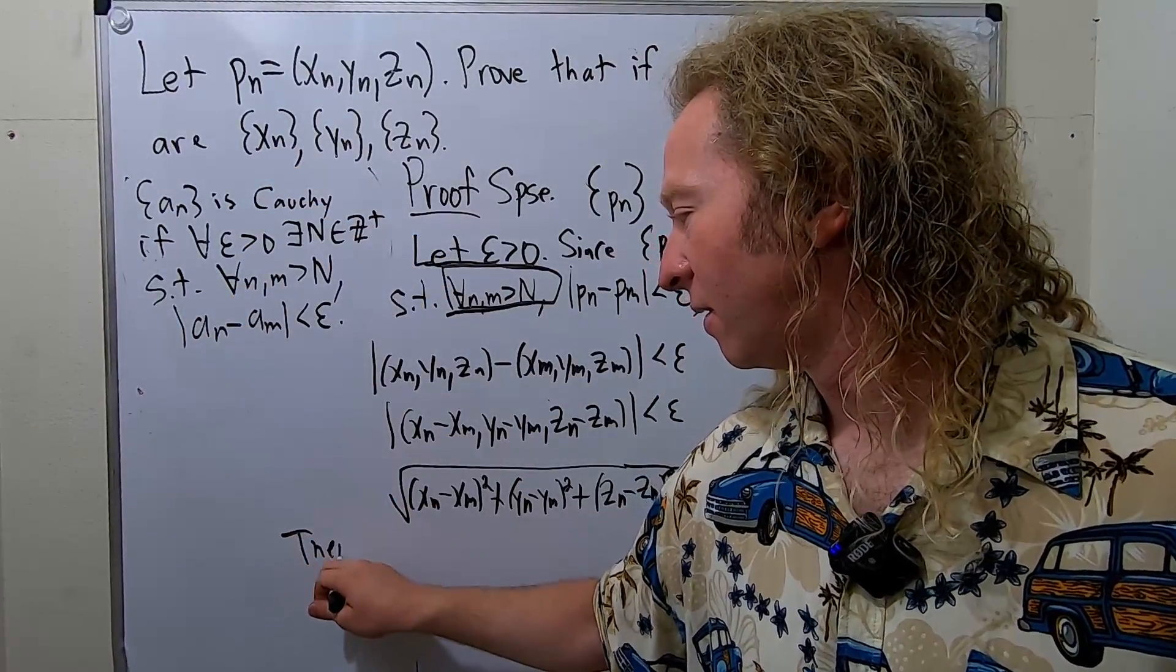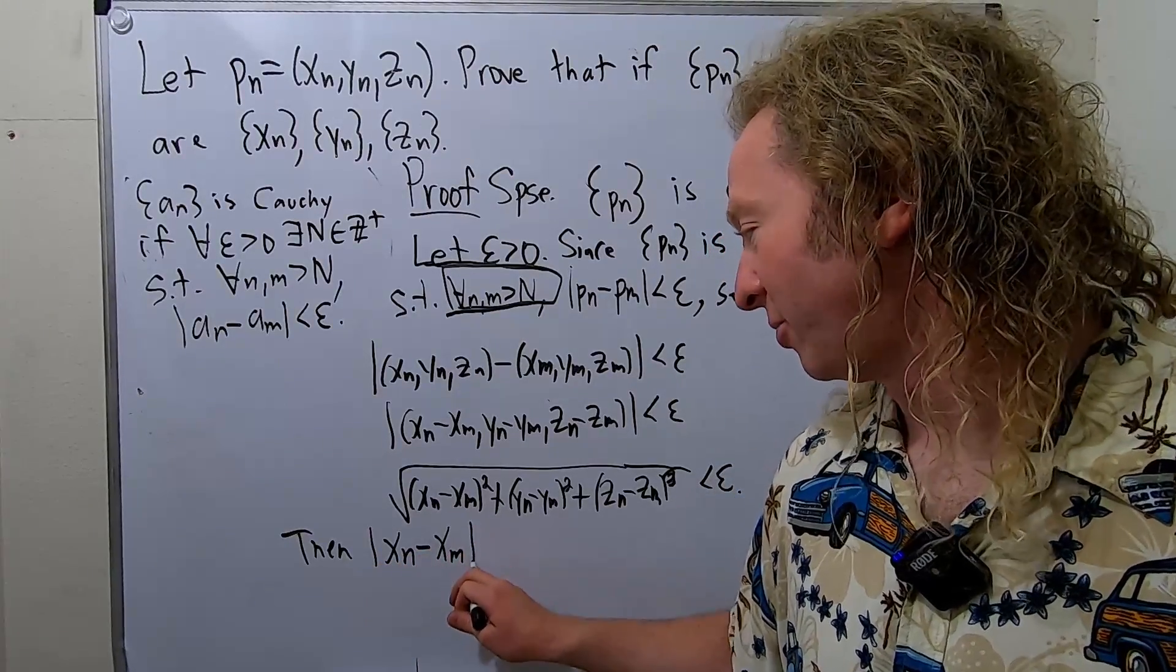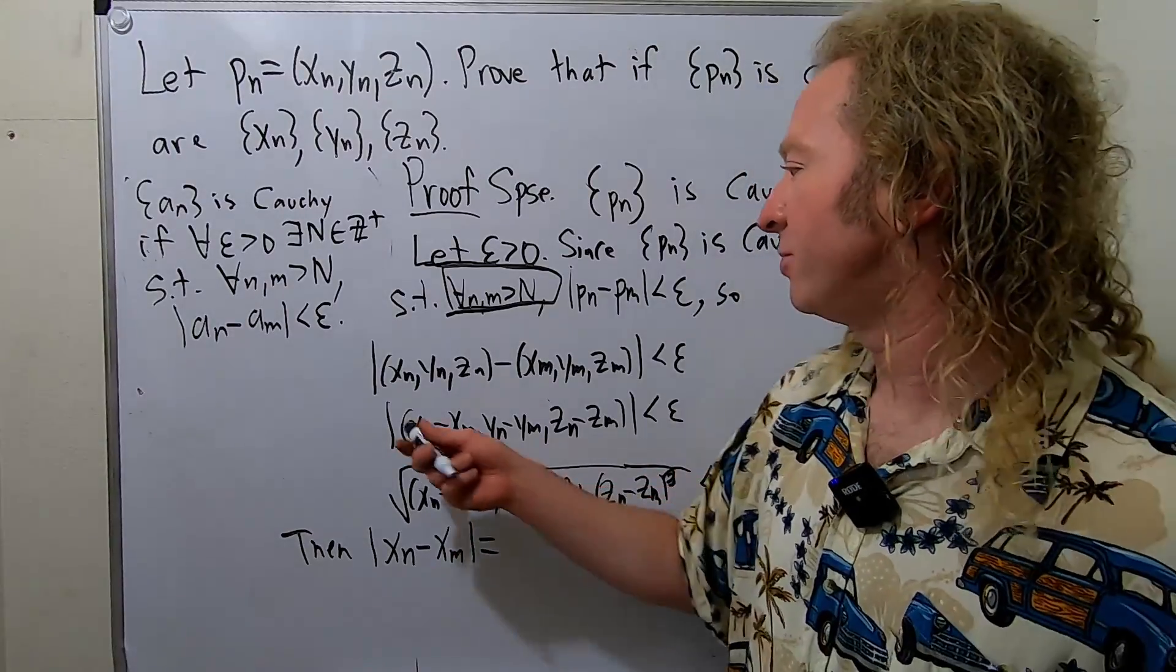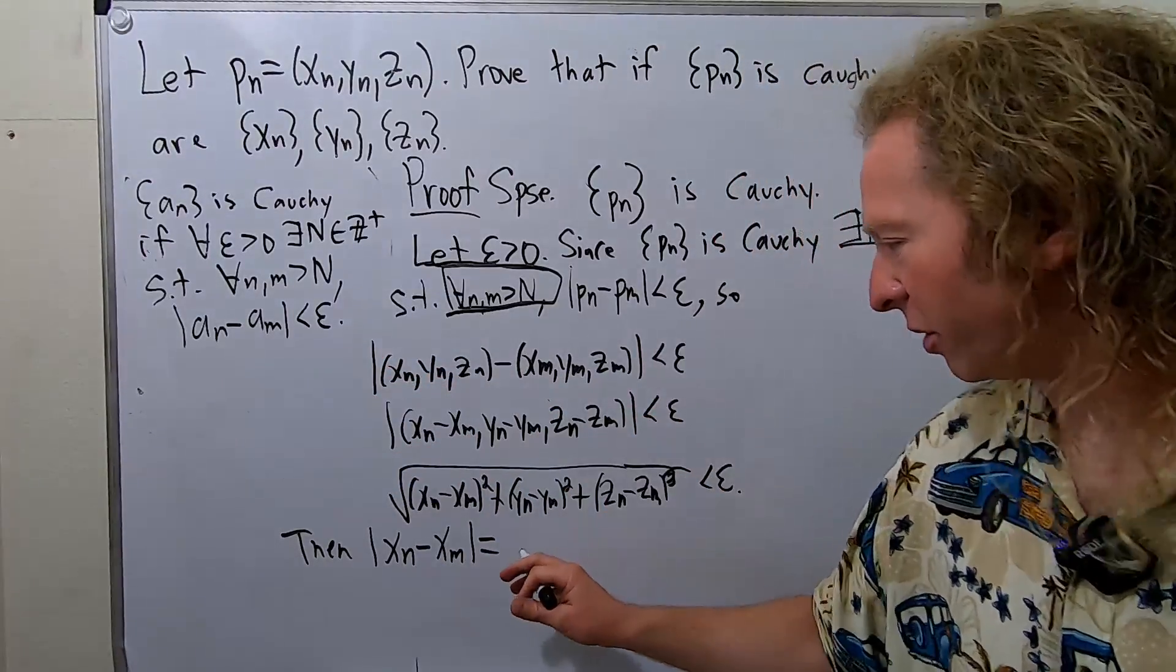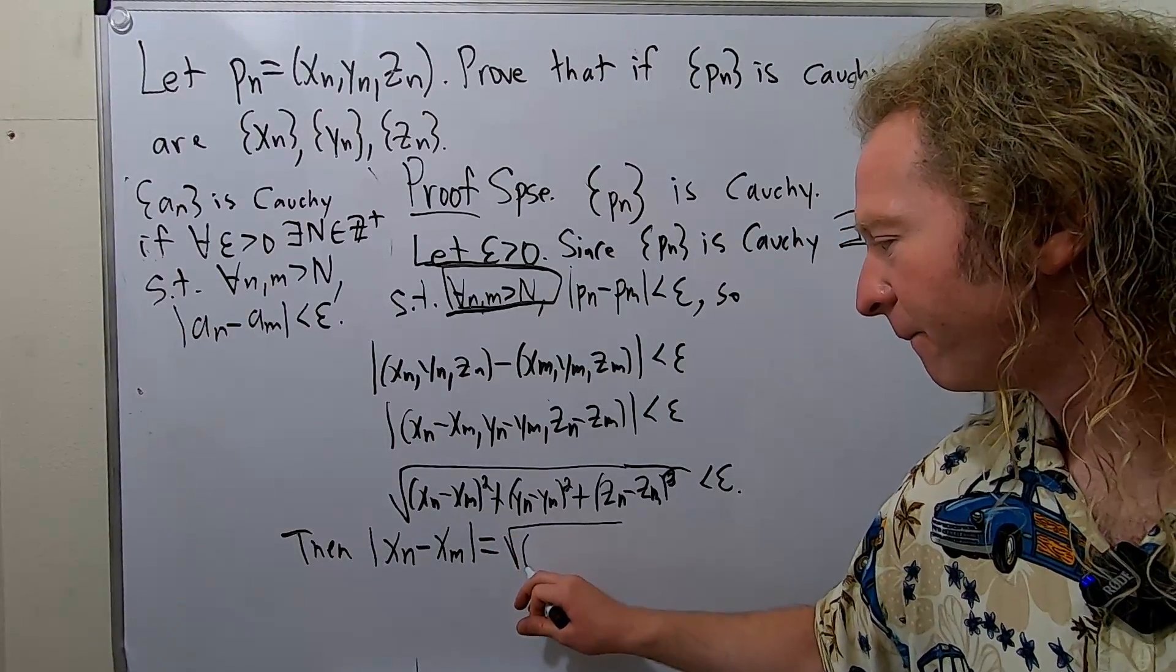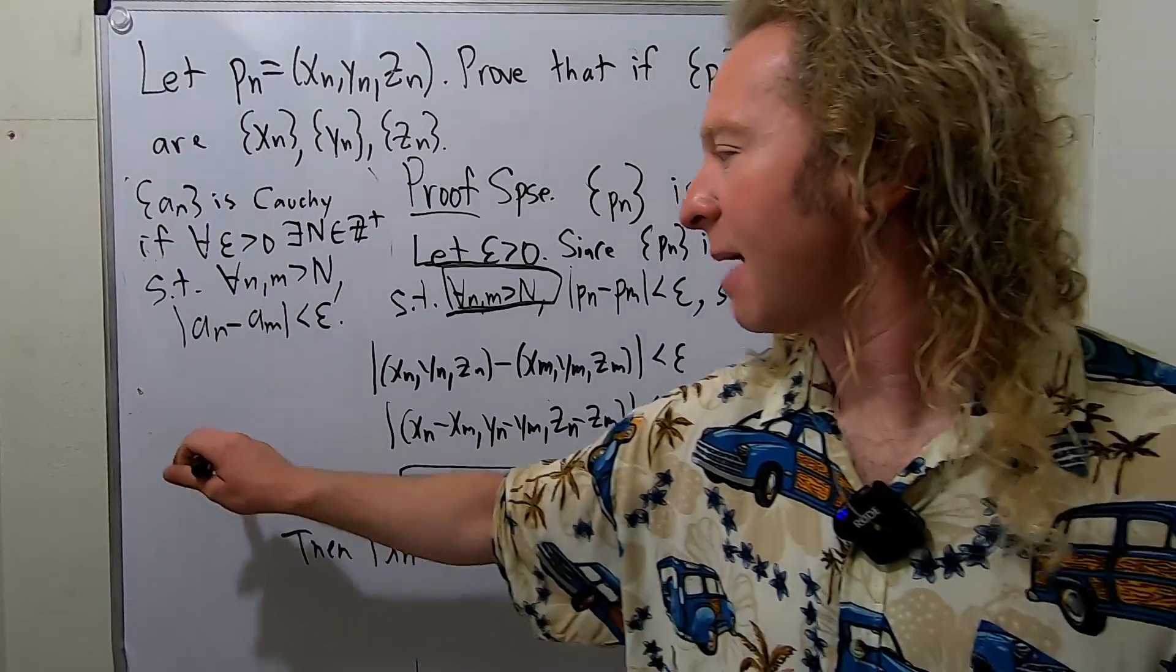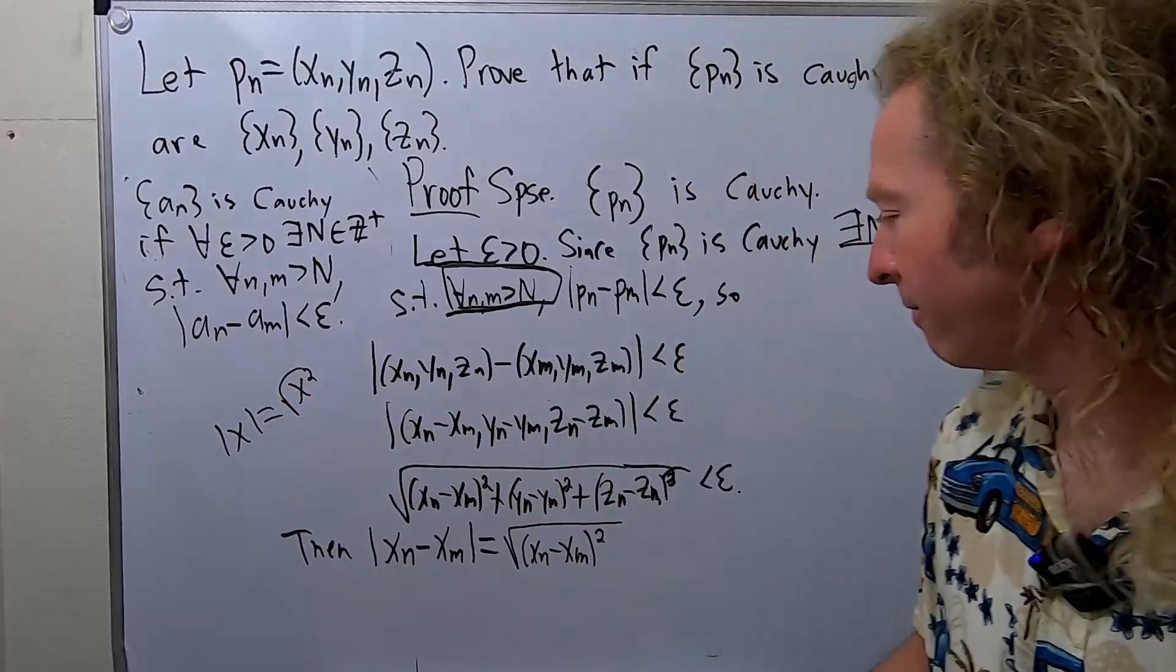So then, Xn minus Xm. So this is absolute value here. So I know I'm using the same notation to mean two different things. It's a little bit abusive. So if you want to be more perfect, you can put like double bars here. But let's just go with it. This is equal to the square root of this. You can do that. The absolute value of X is equal to the square root of X squared. That's a thing from math.